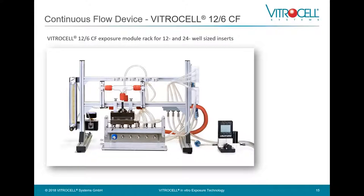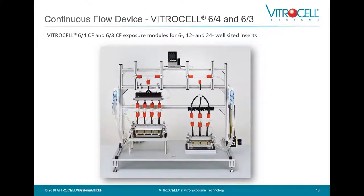Here is an example of a smaller installation: one compact module with six compartments, where three compartments are exposed to the atmosphere and three are exposed to clean air, providing a control for cellular reaction. This device is suitable for 12 and 24 well-sized inserts. On a larger scale, for the six-well format, there are two separate modules — one for exposure and one for clean air — forming a universal platform compatible with six, 12, and 24 well-sized inserts.